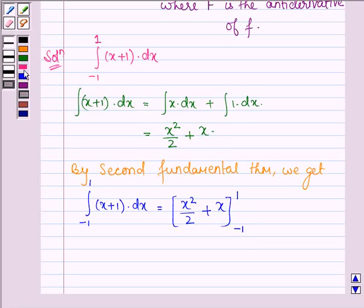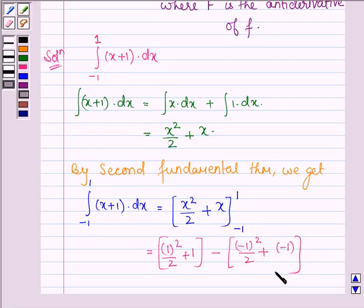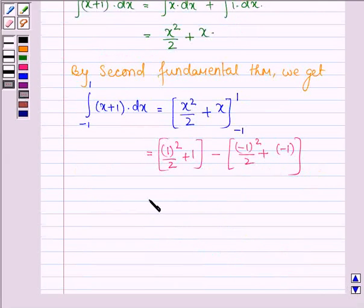This is further equal to 1 by 2 plus 1 minus the quantity 1 upon 2 minus 1.